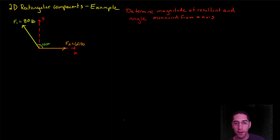Now let's look at a numerical example for 2D rectangular components where we're asked to determine the magnitude of the resultant of two forces that are added together and the angle that this resultant makes if we measure it from the x-axis. And if this problem looks familiar, it's the same problem I used when we were using the parallelogram law.